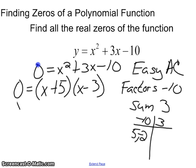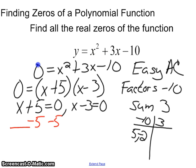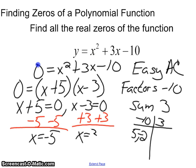Now that this is factored, I'm going to set each factor equal to zero and solve both equations. So I'm going to subtract five, x equals negative five. I'm going to add three, x equals three.